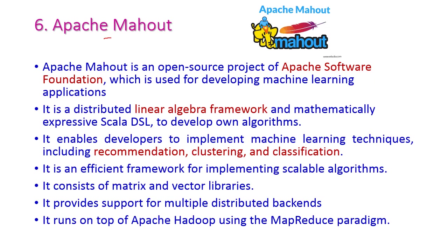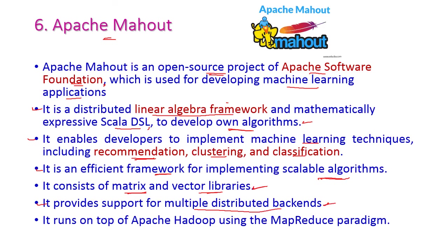The next one is Apache Mahout. It is an open source project of the Apache Software Foundation developed especially for machine learning applications. It is a distributed linear algebra framework with a mathematically expressive scalar DSL used to develop algorithms. Developers can implement machine learning techniques including recommendation, clustering, and classification algorithms. It is an efficient framework for implementing scalable algorithms and consists of matrix and vector libraries. It provides support for multiple distributed backends and runs on top of Apache Hadoop using the MapReduce paradigm.